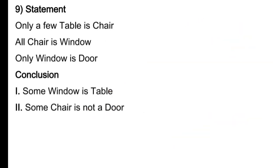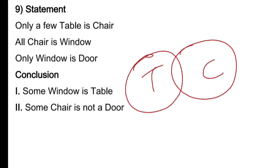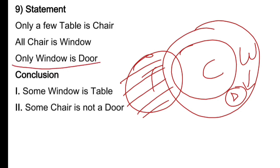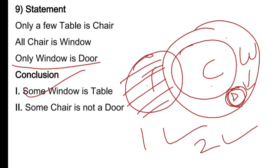Question 4: 'only a few table is chair,' 'all chair is window,' 'only window is door.' Yaad rakhna — 'only window is door' mein door ko window ke andar rakhna hai, kisi se bhi milana nahi hai. Conclusion 1: 'some window is table' — dikh raha hai, yes. Conclusion 2: 'some chair is not a door' — kuch chair door nahi hai, bilkul dikh raha hai. Toh dono sahi hain — answer: both first and second follow.